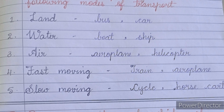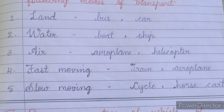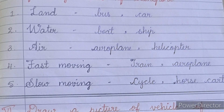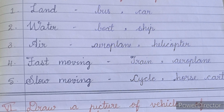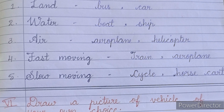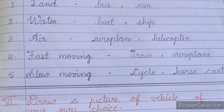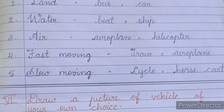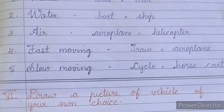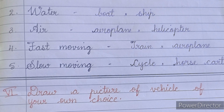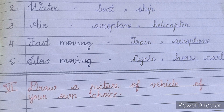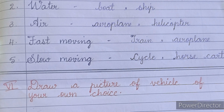Fifth main: Write two examples for the following modes of transport. Number one - Land: bus, car. Number two - Water: boat, ship. Number three - Air: aeroplane, helicopter. Number four - Fast moving: train, aeroplane. Number five - Slow moving: cycle, horse cart.